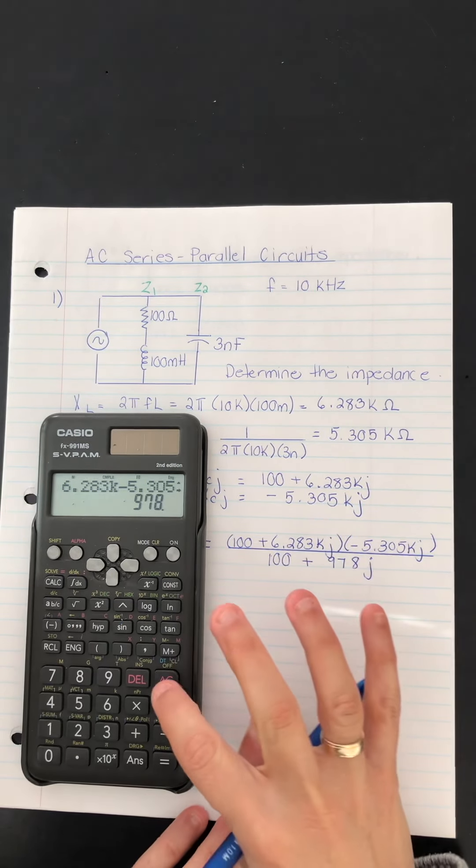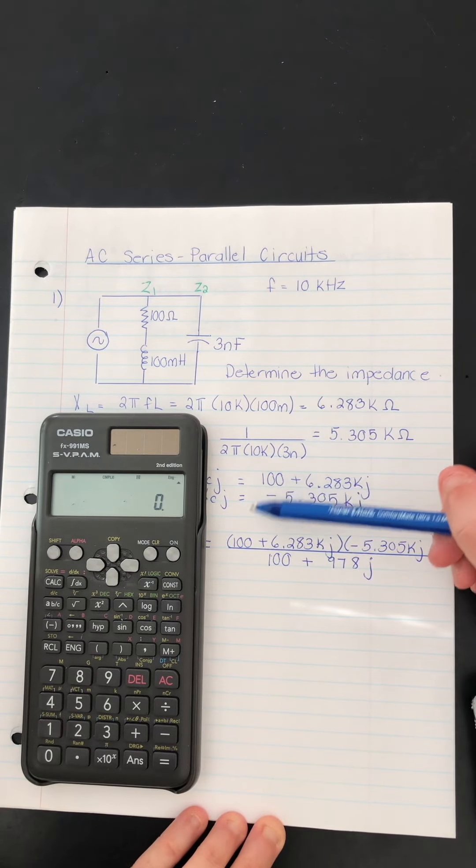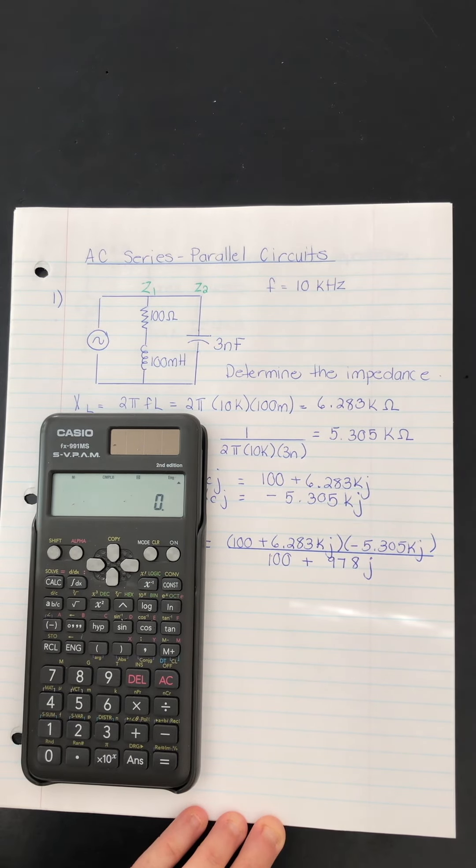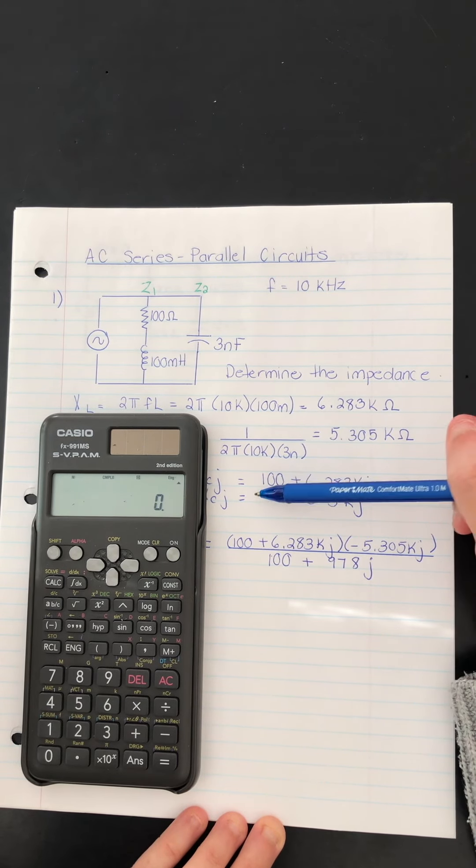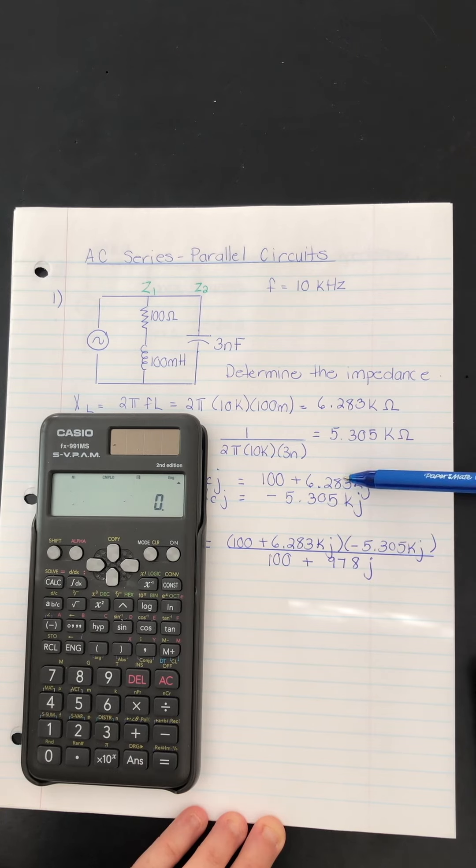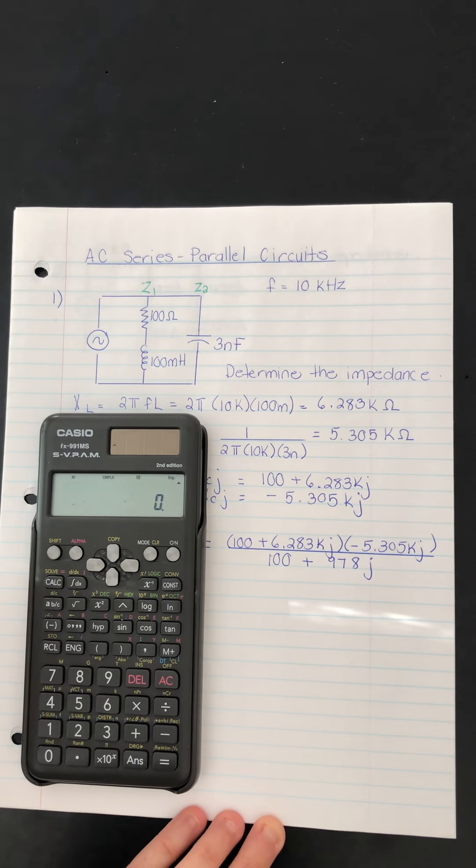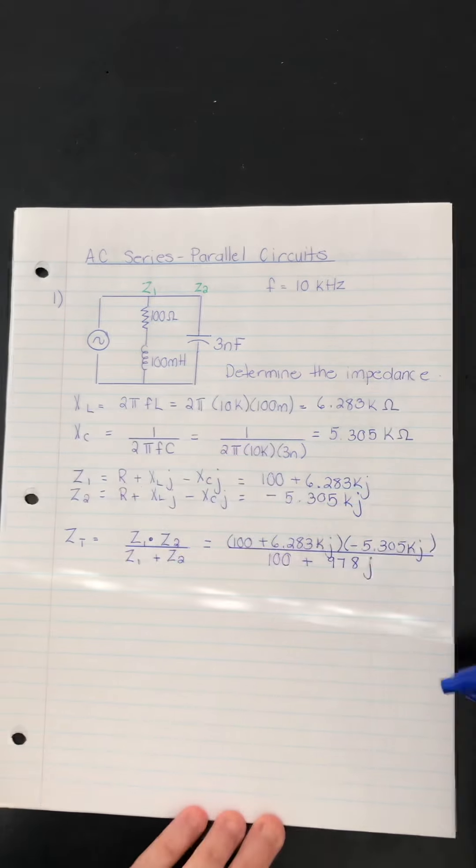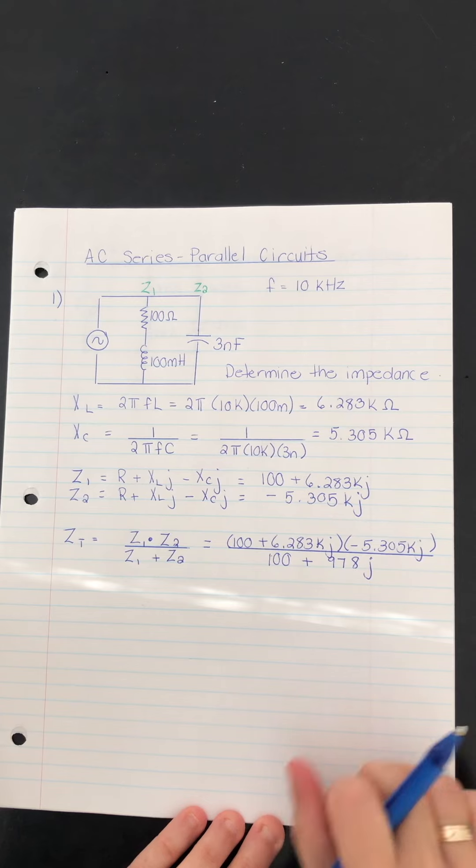So again, all you have to do is collect like terms. So I added 100 with zero. And then I added these two numbers, 6.283 kilo added with negative 5.305 kilo. And that gave me 978. And don't forget, it has that J operator.